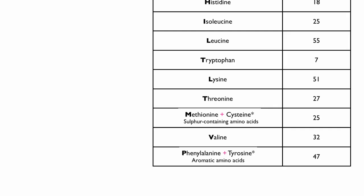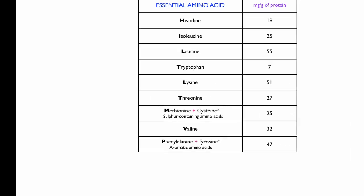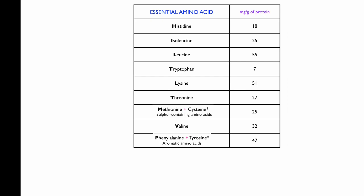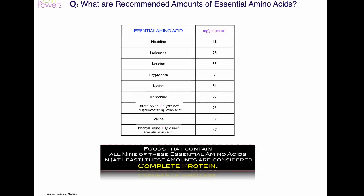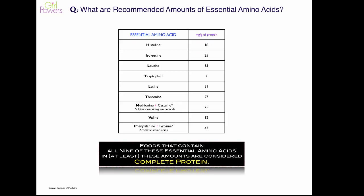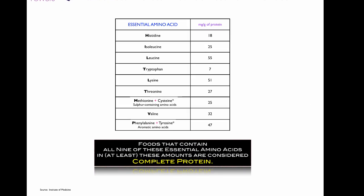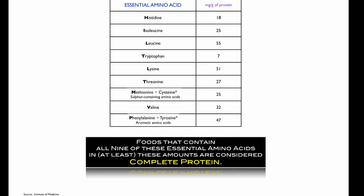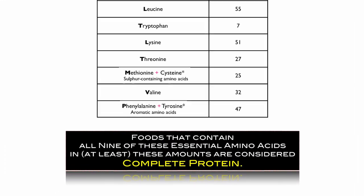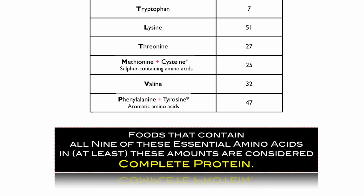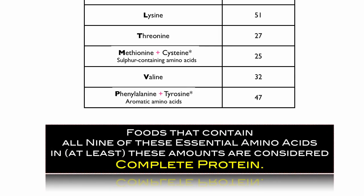We see here the numbers in terms of the milligrams per gram of protein and the recommended amounts. Foods that contain all nine of these essential amino acids in at least those amounts are how complete protein is defined. So complete protein contains all of these essential amino acids in the correct amount.